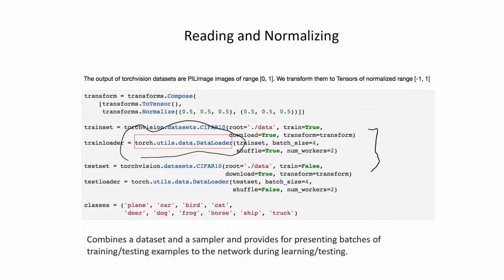This slide shows how the data will be read and normalized, with some code lines already familiar from the previous lecture. The key utility is torch.utils.data.DataLoader, which combines a dataset and a sampler to present batches of training or testing examples to the network during learning or testing.